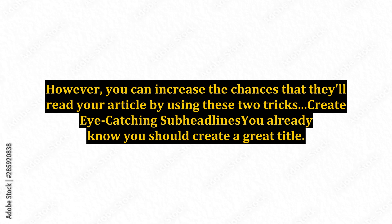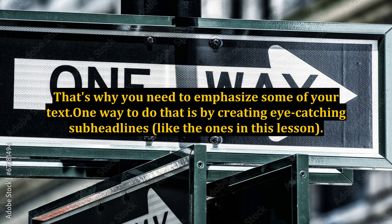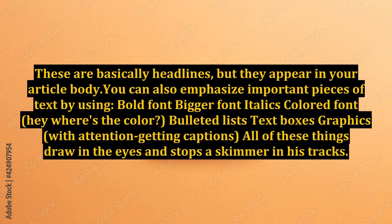Trick one: create eye-catching subheadlines. You already know you should create a great title. But if that's the only bolded part of your text — if the rest of your article looks like a wall of plain text — the reader may not even bother skimming. That's why you need to emphasize some of your text. One way to do that is by creating eye-catching subheadlines, like the ones in this lesson. These are basically headlines, but they appear in your article body.